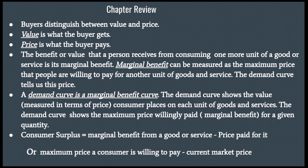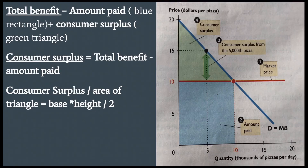Consumer surplus is equal to marginal benefit from a good or service — which is also the maximum price a consumer is willing to pay — minus the price paid, or the current market price. The total benefit equals the amount paid, shown as the blue rectangle in the figure, plus consumer surplus, shown as the green triangle. Consumer surplus therefore equals total benefit minus amount paid, and is the area of a triangle: base times height over 2.